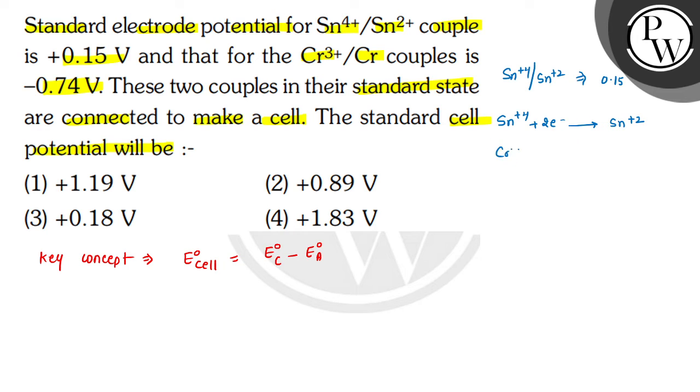In the second reaction, Cr³⁺ to Cr is given as -0.74 V. This reaction is when Cr³⁺ gets 3 electrons, then it is converted into Cr. It is given as -0.74 V. Both are given in reduction potential.